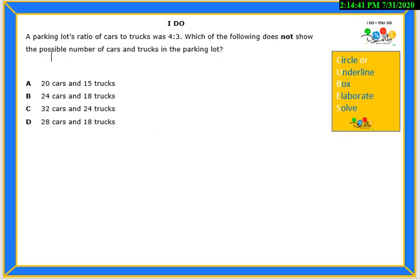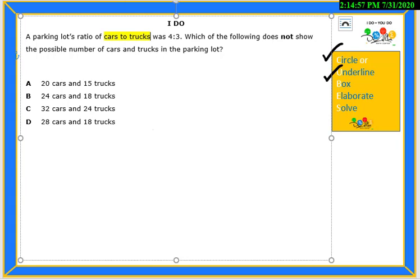We will start with circle or underline keywords. But if you prefer, you can also highlight cars to trucks, 4 to 3, does not show.